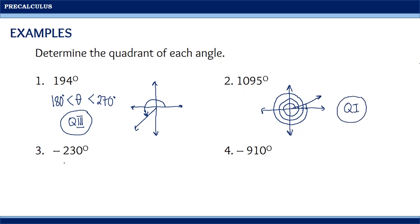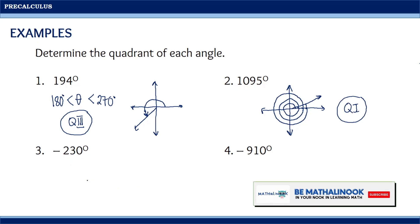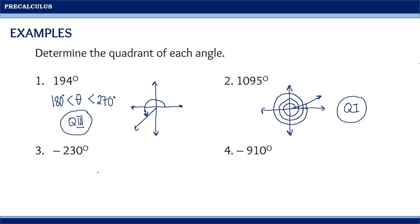For the third given, we have negative 230 degrees. Since the given angle is negative, the rotation of our terminal side should be in the clockwise direction. From the starting point, we reach negative 90 degrees, then negative 180 degrees. Since we have negative 230 degrees, we need to move another 50 degrees. Therefore, this is the illustration of the angle that measures negative 230 degrees, and it is very clear that the given angle lies in the second quadrant.